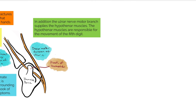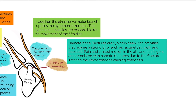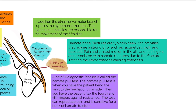The hypothenar muscles are responsible for the movement of the fifth digit or pinky. Hamate bone fractures are typically seen with activities that require a strong grip, such as racquetball, golf, and baseball. Pain and limited motion in the fourth and fifth fingers are associated with hamate fractures due to the fracture irritating the flexor tendons causing tendonitis. A helpful diagnostic feature is called the hamate pull test. The hamate pull test is when you have the patient bend the wrist to the medial or ulnar side, then flex the fourth and fifth fingers against resistance. The test can reproduce pain and is sensitive for a hook of hamate fracture.